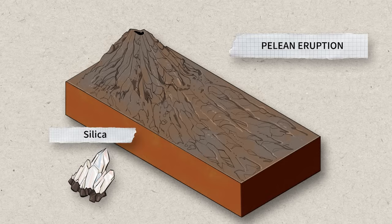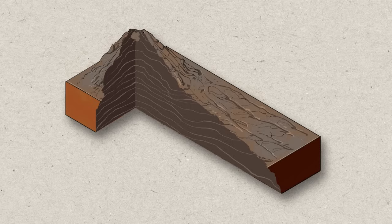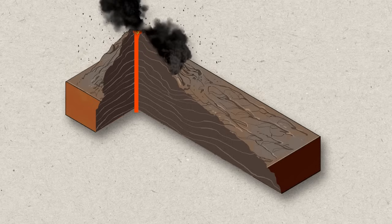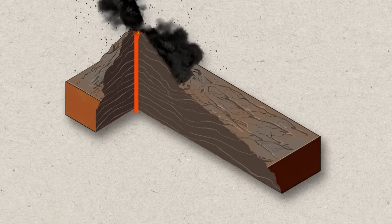If the magma contains more silica, the lava is thicker and the pressure under the cap is even greater. When it gives way, the blockage is pulverized and the base of the dome is torn apart. A thick scorching cloud spurts out. This cloud of burning gas and lava hurtles down the side of the volcano at several hundred kilometers per hour.